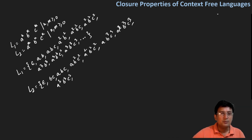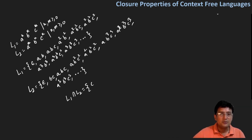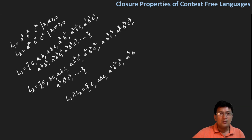So when we take the intersection of L1 and L2, the strings that appear in both include: epsilon, abc, a²b²c², a³b³c³, and so on. B and C must have the same count, and A must also match.